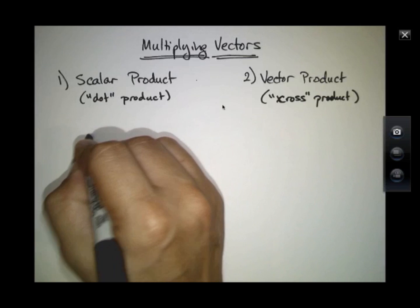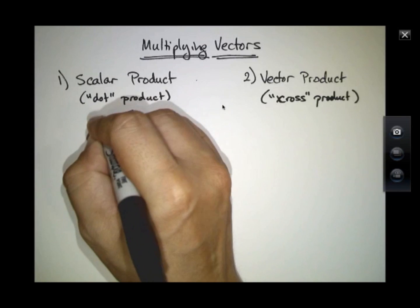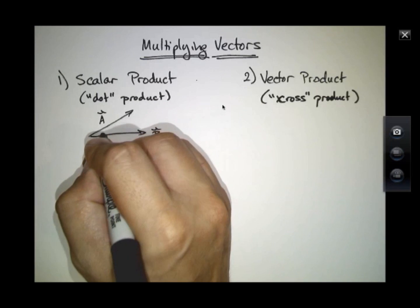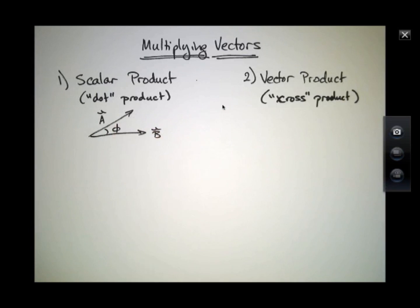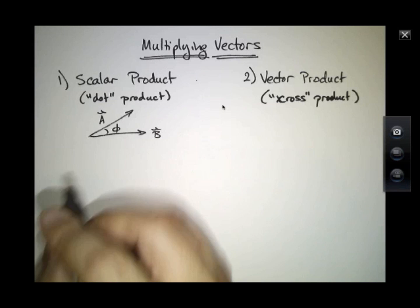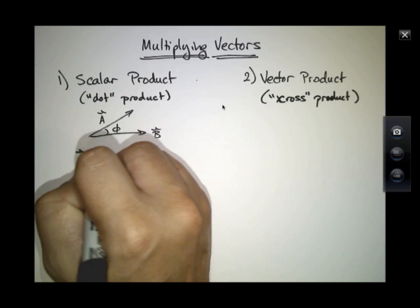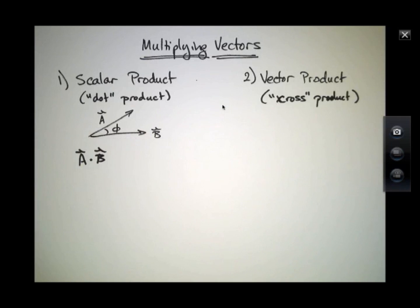If I have two vectors, A and B, and they have some different magnitudes and a relative angle between them, we call the dot product A dot B. This product produces a number.